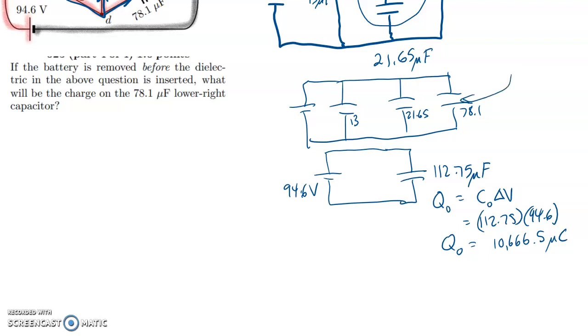But the voltage will change because the charge is going to rearrange itself. Like when we insert a dielectric in there, the charge is going to move around, and that's going to also change the voltage because voltage is dependent on charge and capacitance. So next step is I really just have to find the new equivalent capacitance when we add the dielectric.